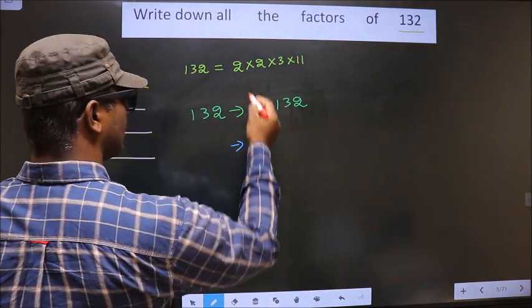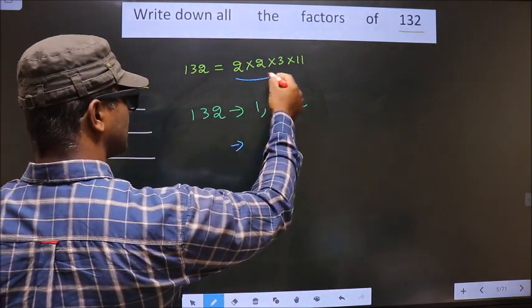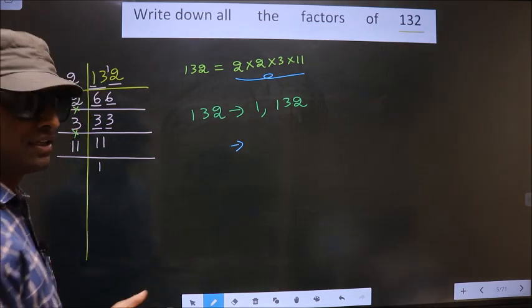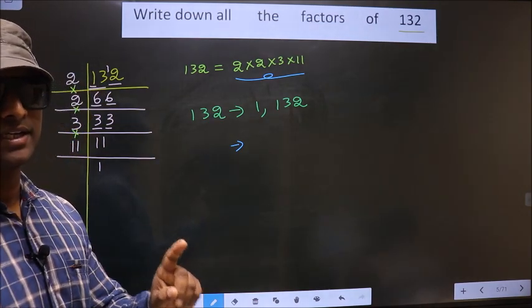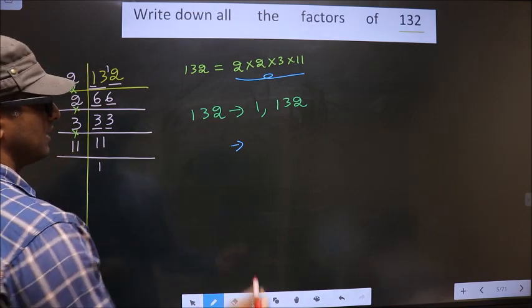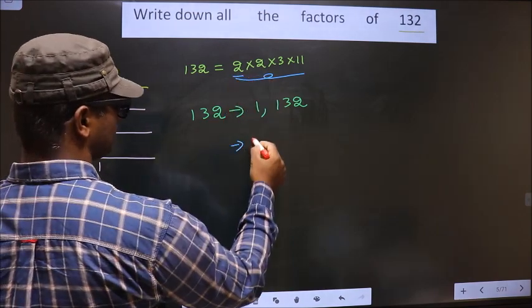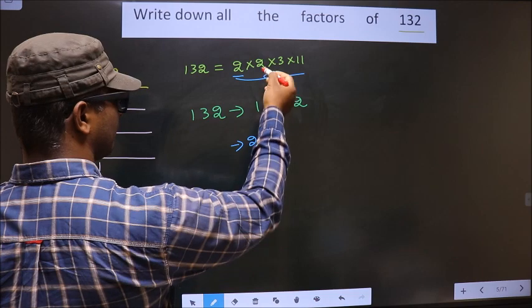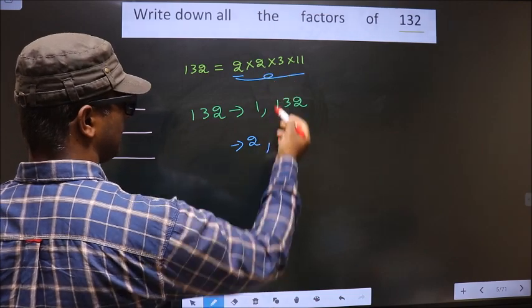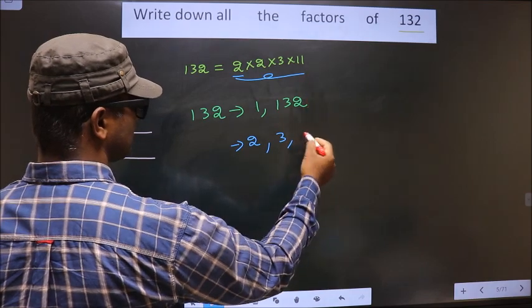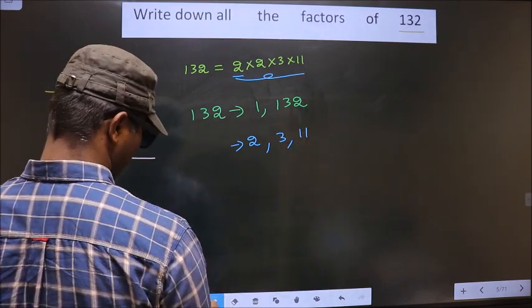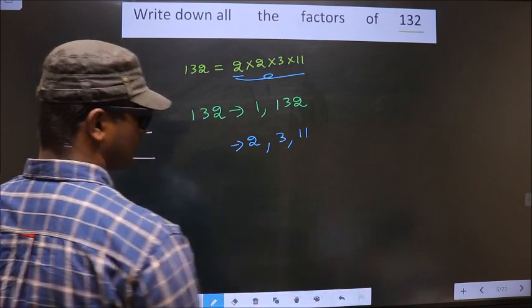Now from these numbers, you select one different number at a time. So first I select 2. If I select 2 again, I already have it here. So next different number is 3, and next different number is 11.